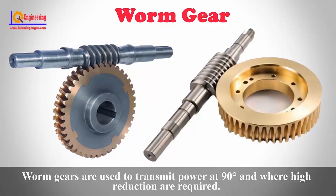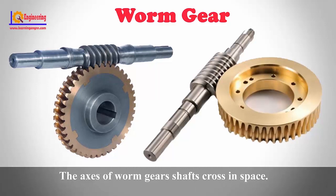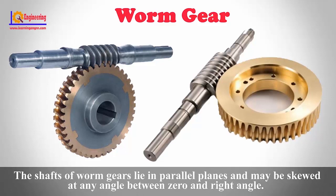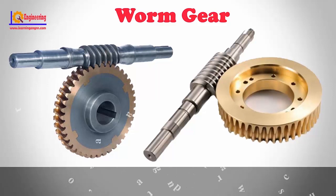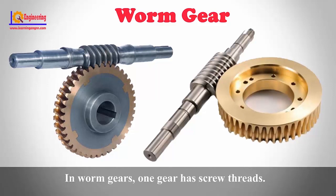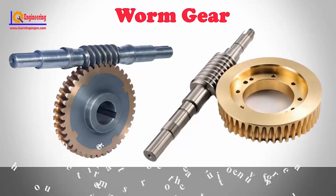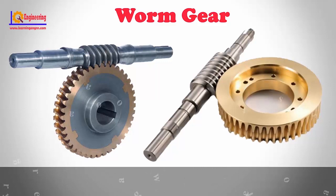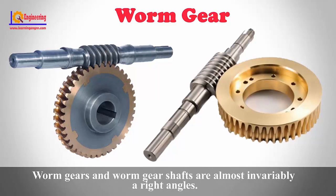Worm gears are used to transmit power at 90 degrees and where high reductions are required. The axis of worm gear shafts cross in space. The shafts of worm gears lie in parallel planes and may be skewed at any angle between zero and a right angle. In worm gears, one gear has screw threads. Due to this, worm gears are quite vibration free and give a smooth output. Worm gears and worm gear shafts are almost invariably at right angles.